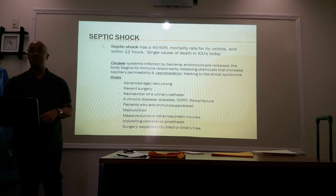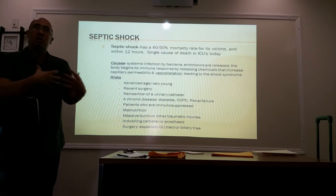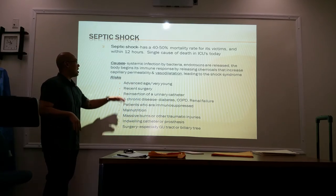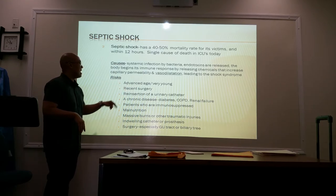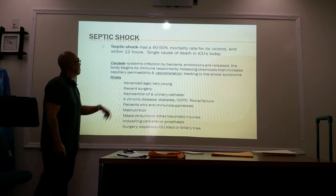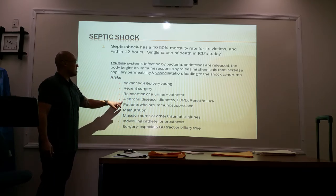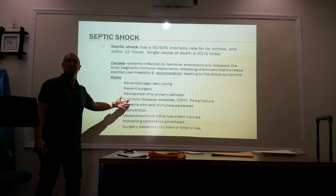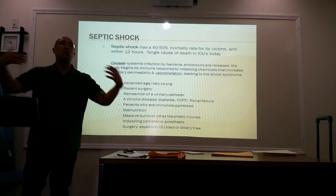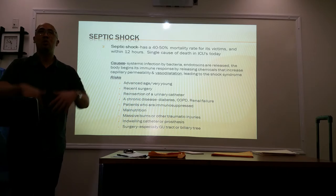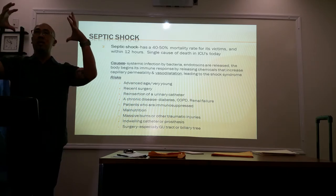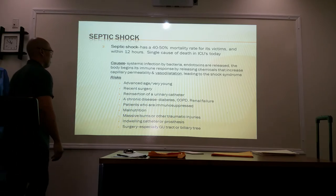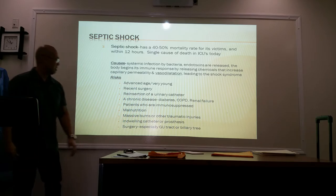If you don't have blood circulating, you can die immediately — we're talking systemically, not just a small area, but whole body. Those susceptible to septic shock include the elderly and the very young, those who've had recent surgery, reinsertion of a urinary catheter, or a chronic disease. We're talking about infections that spread throughout your body into your circulatory system — your blood supply — resulting in a whole body infection with vessels remaining dilated and no adequate blood flow.